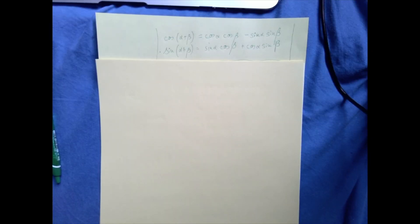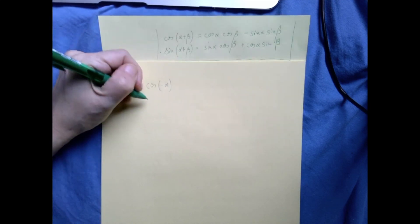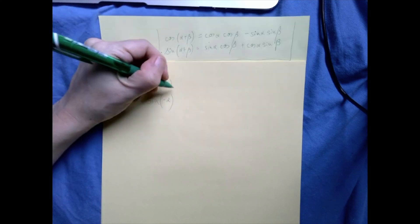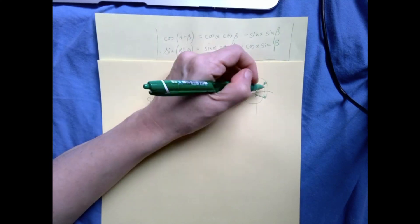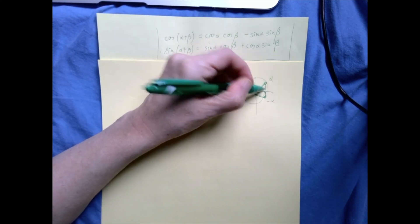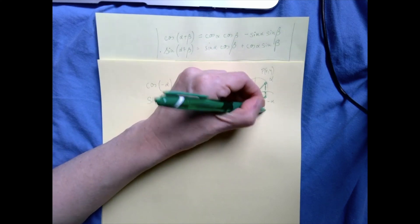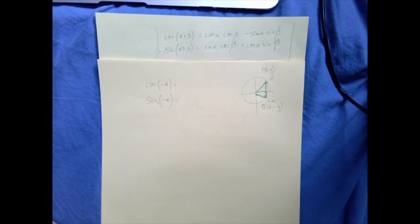Next, we're going to derive the difference formulas for cosine and sine using the sum formulas. My recommendation is that students memorize those two sum formulas and derive everything else from those. So how can we figure out the difference formulas? First, we have to recall how to simplify cosine or sine of negative alpha. From unit circle trigonometry, if this angle is alpha, then negative alpha is its reflection across the x-axis. So cosine of minus alpha is the same as cosine alpha — cosine is an even function.